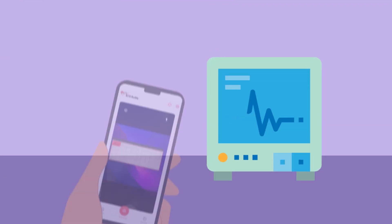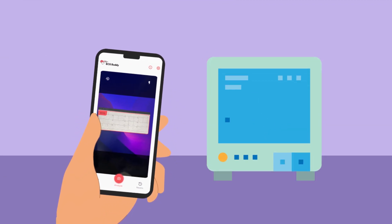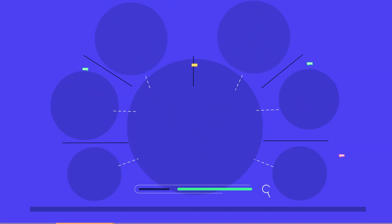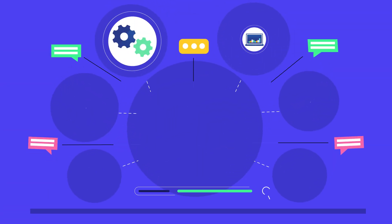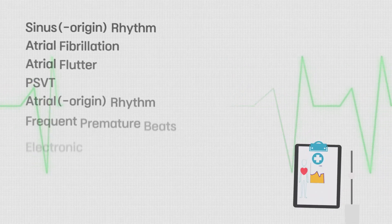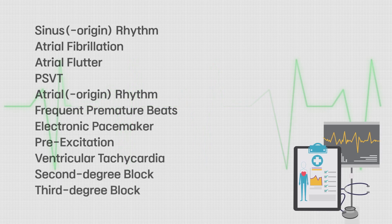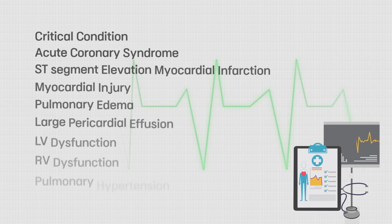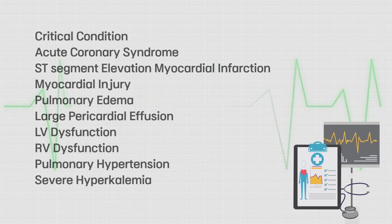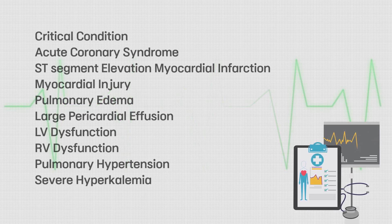Our ECG Buddy enables you to analyze 12-lead ECG images with an app or through direct integration with electronic medical record servers. It classifies 11 types of heart rhythms and provides digital biomarkers related to the risk of 10 diseases, including myocardial infarction, heart failure, and hyperkalemia.